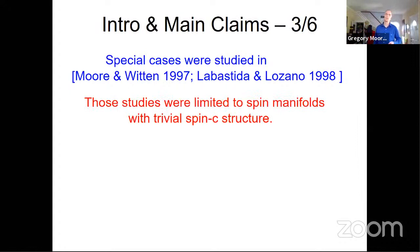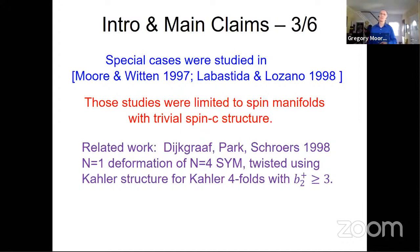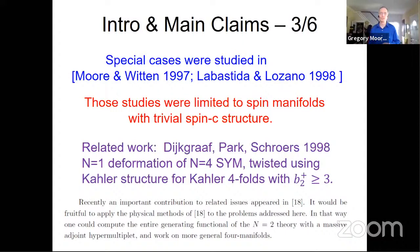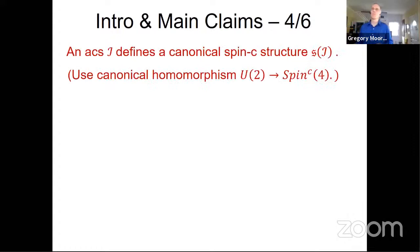Special cases of this function were studied in the late 90s, but those studies were limited to spin manifolds with trivial spin-C structure. There's also related work by Dijkgraaf, Park, and Schroer from the same period, studying these questions from the point of view of N=4 super-Yang-Mills theory. At the end of their paper they say it would be wonderful to apply the physical methods of reference 18 to the problems addressed here. Well, better late than never — 22 years later, that's what we're doing.